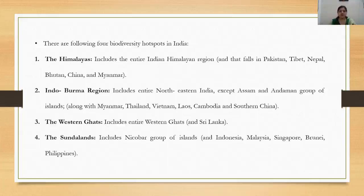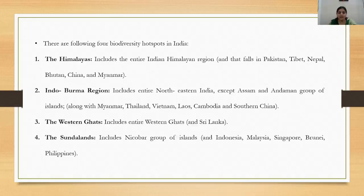There are four biodiversity hotspots recognized in India. The first is the Himalayas, which includes the entire Indian Himalayan region falling in Pakistan, Tibet, Nepal, Bhutan, China, and Myanmar. The second is the Indo-Burma region, which includes entire northeastern India except Assam and the Andaman group of islands, along with Myanmar, Thailand, Vietnam, Laos, Cambodia, and southern China.